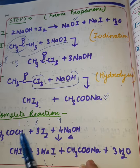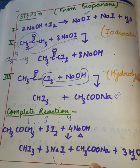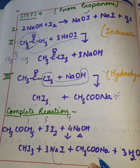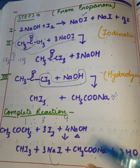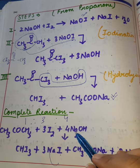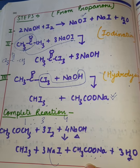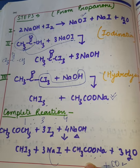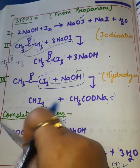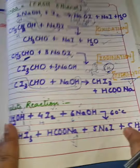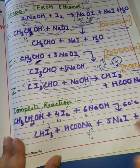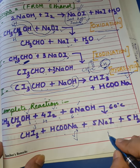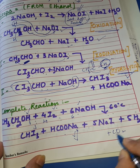Since propanone (acetone) was used, sodium salt of acetate — Sodium Acetate — is obtained, plus water. If Na2CO3 is used instead of NaOH in either reaction, an additional product CO2 is obtained.